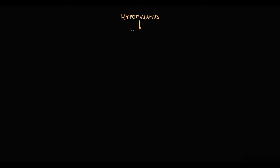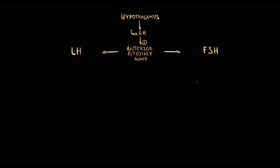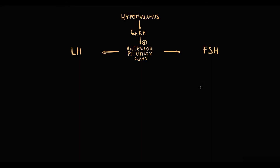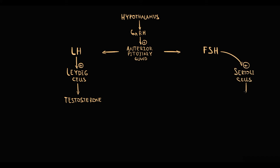Initially, the hypothalamus secretes gonadotropin-releasing hormone, which stimulates the pituitary gland to secrete gonadotropins — luteinizing hormone and follicle-stimulating hormone. These two hormones enter the bloodstream where they stimulate cells located in the testes. Luteinizing hormone acts on Leydig cells and stimulates testosterone production.